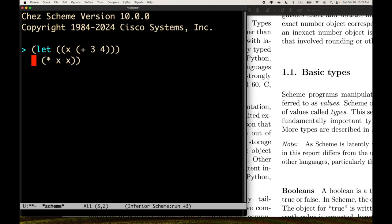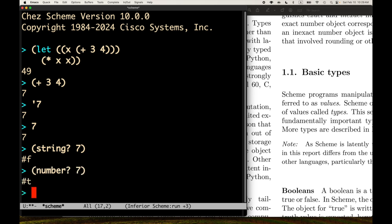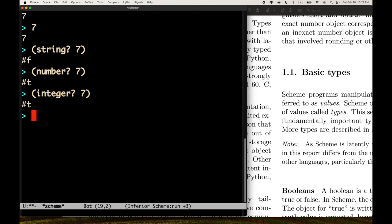We've got, in Scheme, we can say the value of plus three, four is seven. That's the object that they're referring to. And we can ask questions. We can quote seven, the value of seven is just seven itself, it's a seven, it's a self-evaluating literal, and we can ask questions. We can ask, is seven a string? False. Is seven a number? Is seven an integer? Yes. So we can ask questions about the value, the type, the object. But notice we're talking about the values, not the expressions.